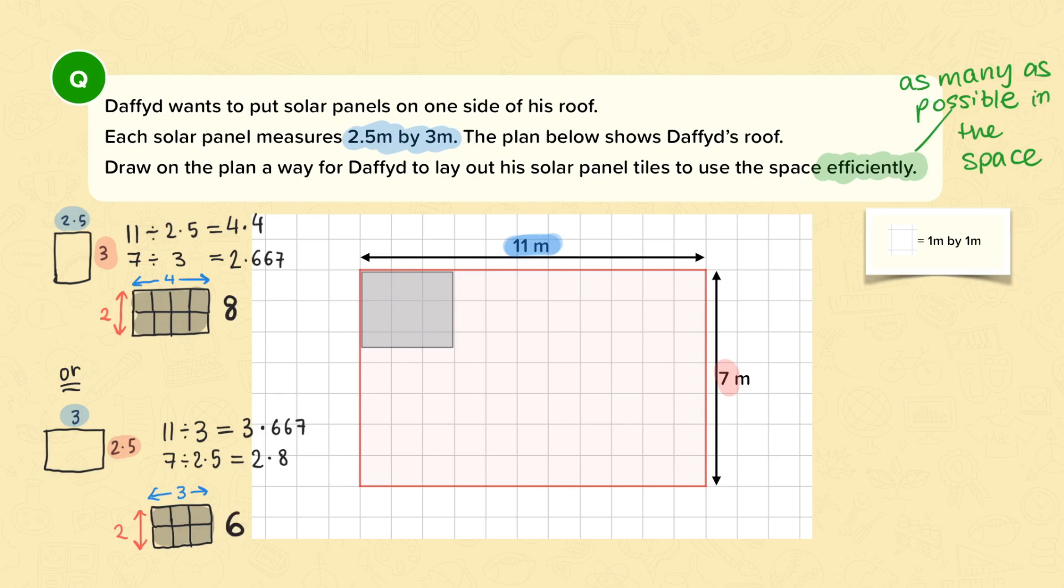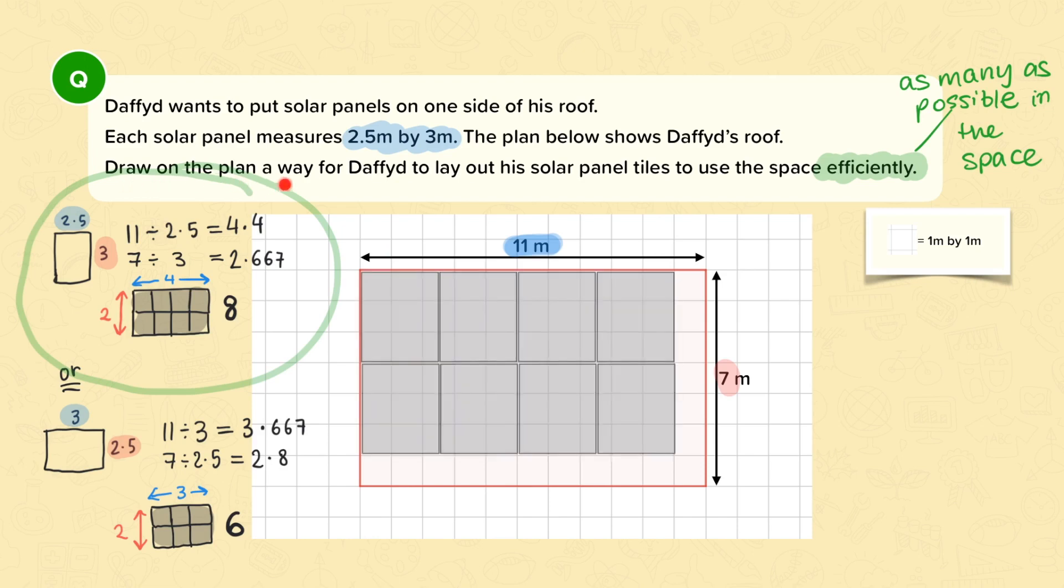So the best way to lay out the panels on this roof is the first way. So we need to turn them so that they are 2.5 metres that way, and 3 metres this way. And then we can fit 8 solar panels on. So if I draw on the plan a way to lay out the solar panel tiles to use the space efficiently, efficiently meaning the most I can get on one roof, then this is what it should look like.